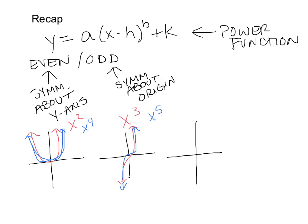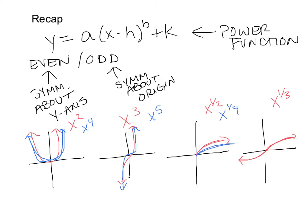For fractional exponents, think about the square root and cube root graphs. The square root graph, or x^(1/2), looks like half a parabola — because you can't take square roots of negatives, which is why it only has that one part. The cube root graph has both parts since you can take cube roots of negatives. Higher fractional powers like x^(1/4) or x^(1/5) follow the same shapes but get flatter — the higher the power, the flatter it gets near the origin.